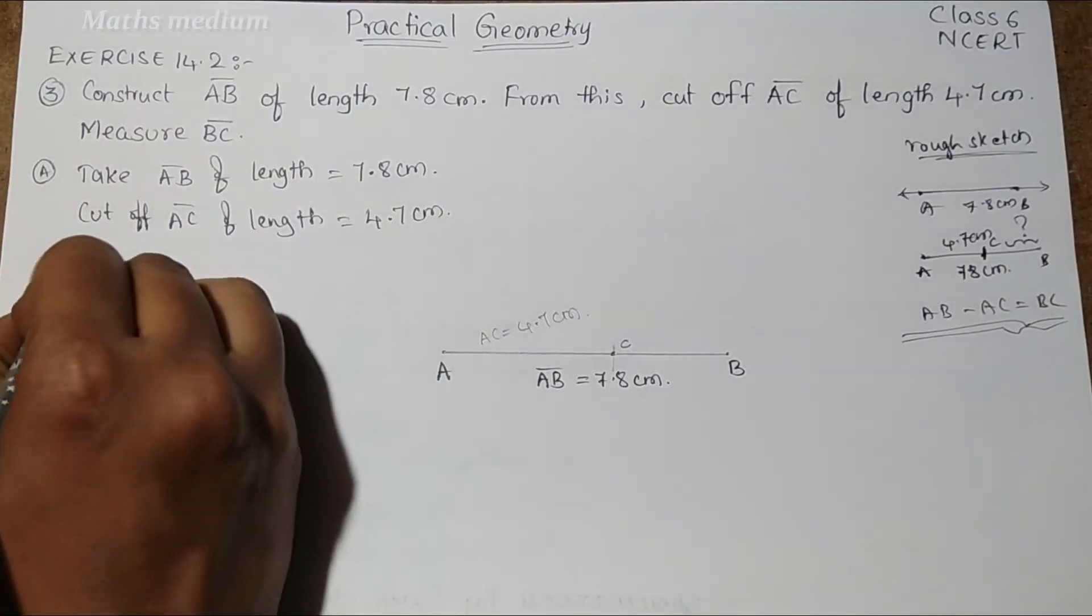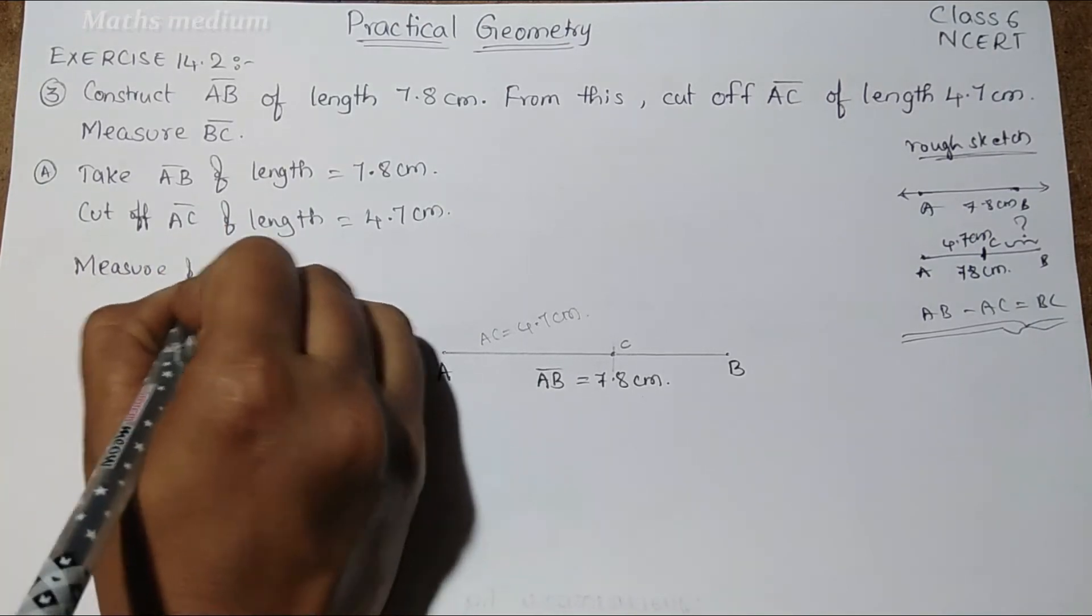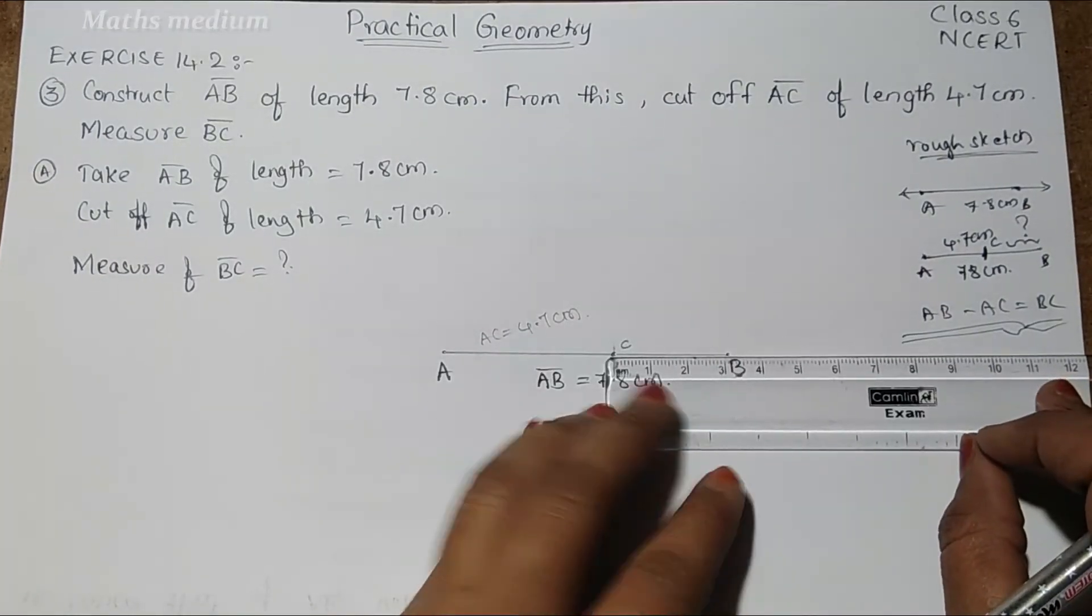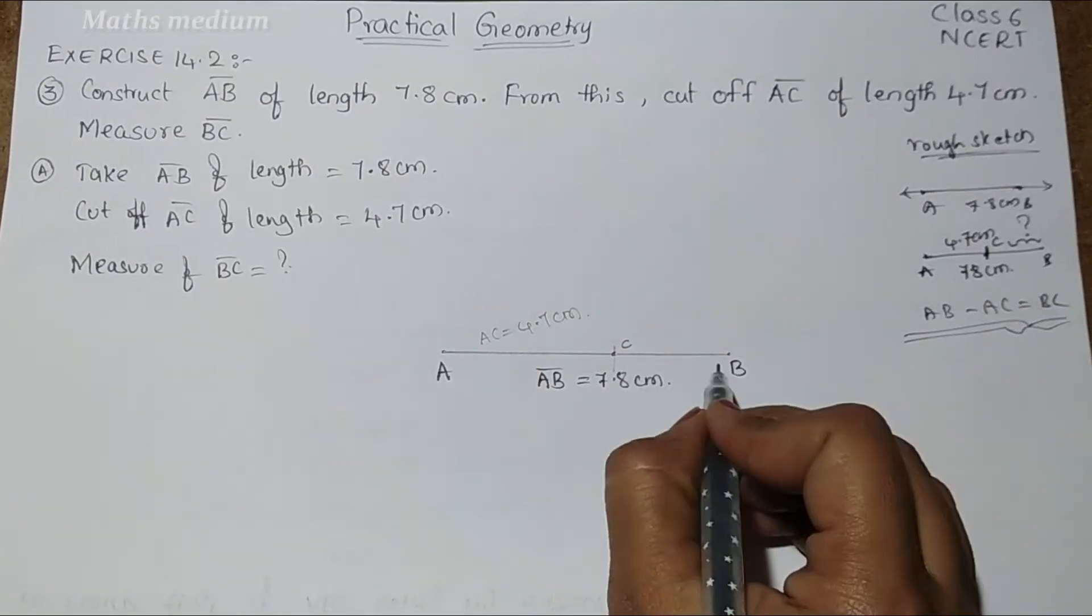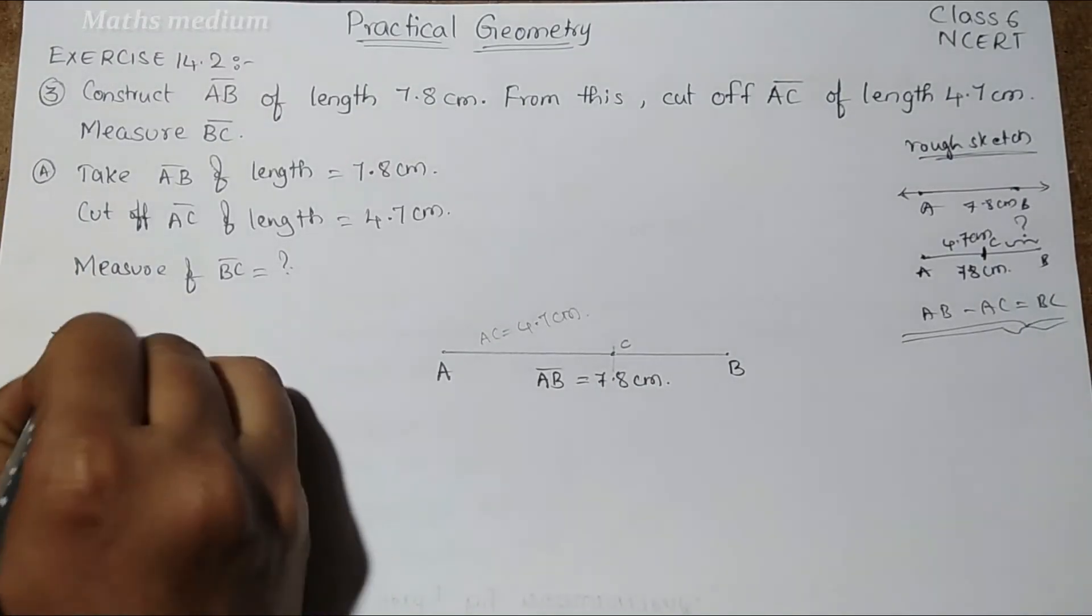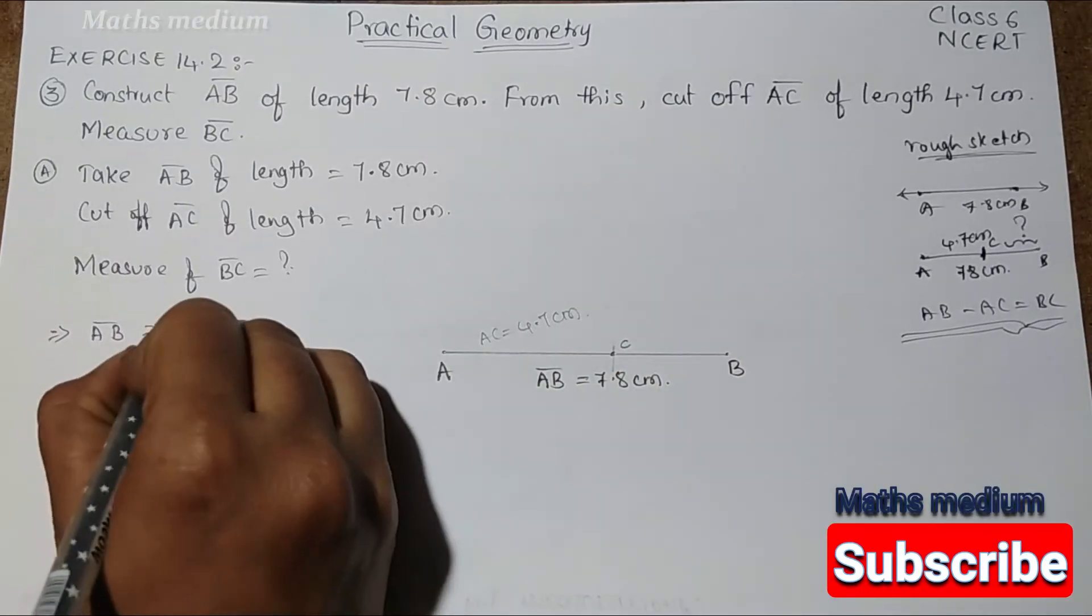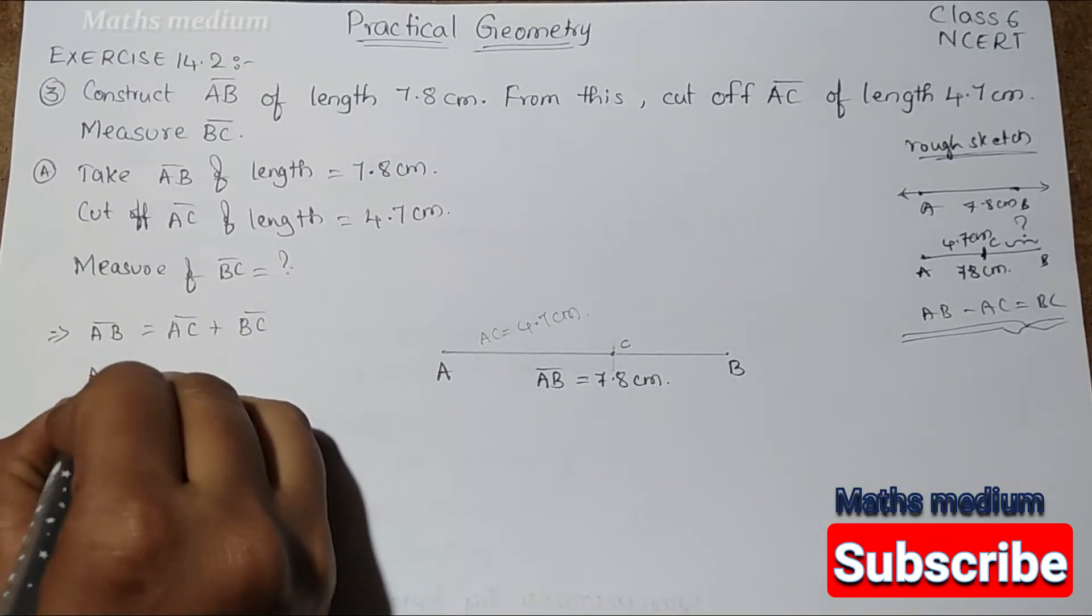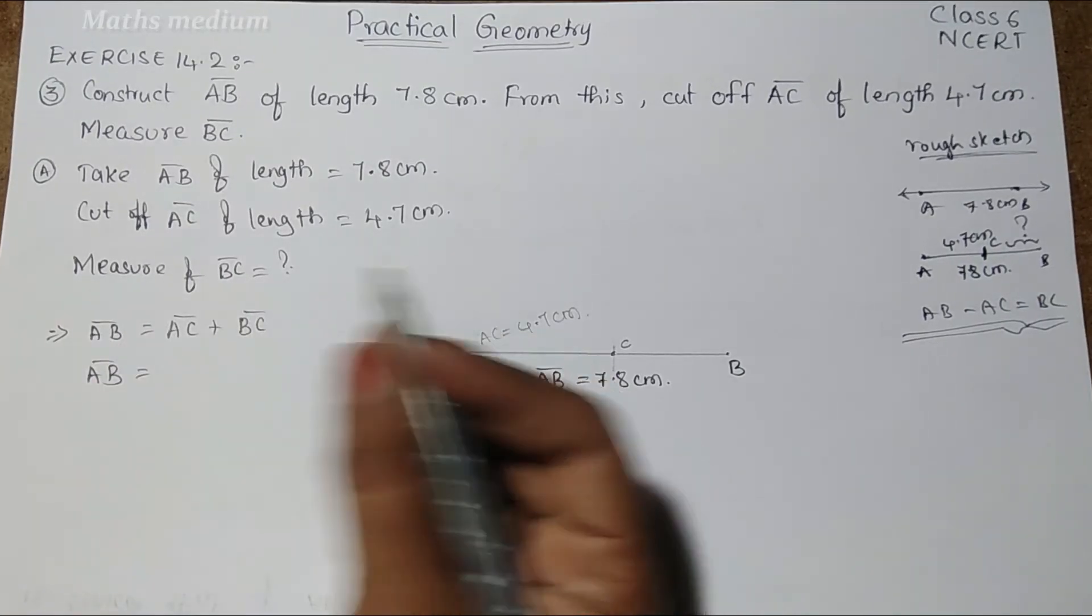Measure of BC bar. We can measure with this remaining part. This is 3.1. We can measure with the scale also. AB bar we cut off into two parts: AC bar plus BC bar. AB bar is equal to AC bar plus BC bar. Therefore, BC bar is equal to AB bar minus AC bar.